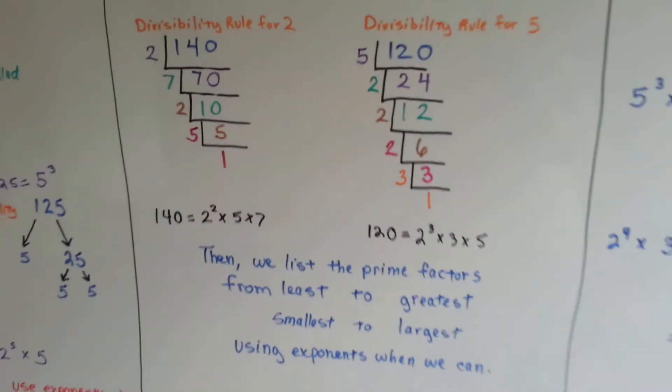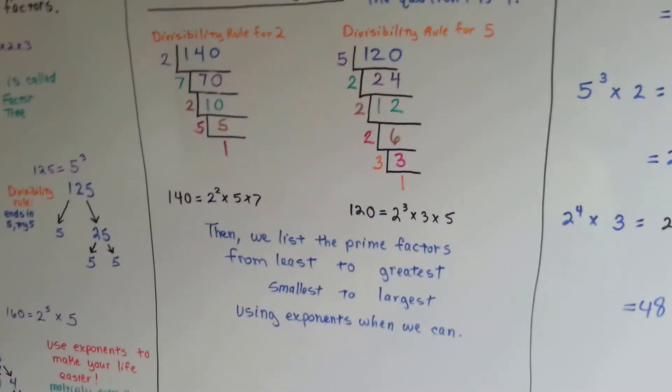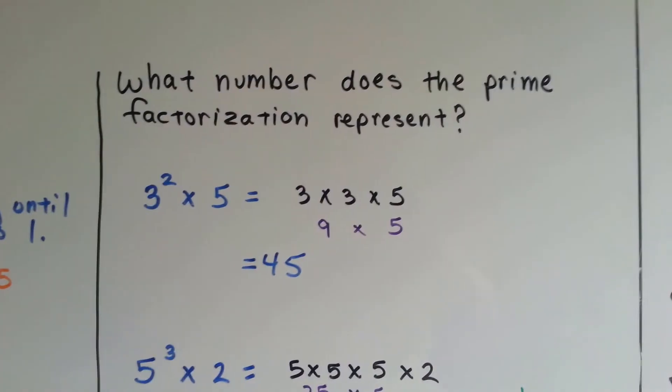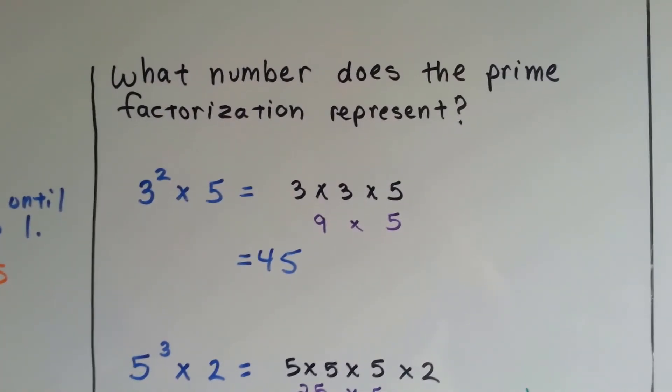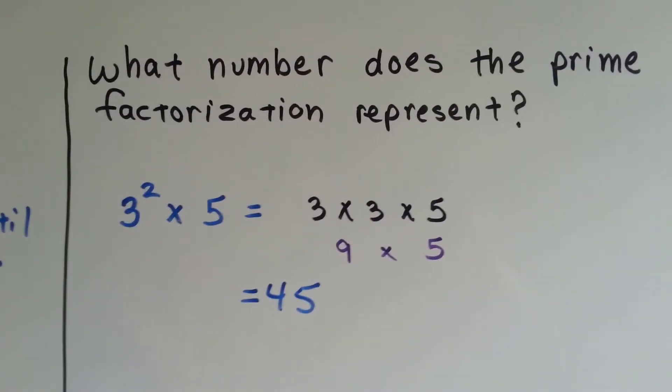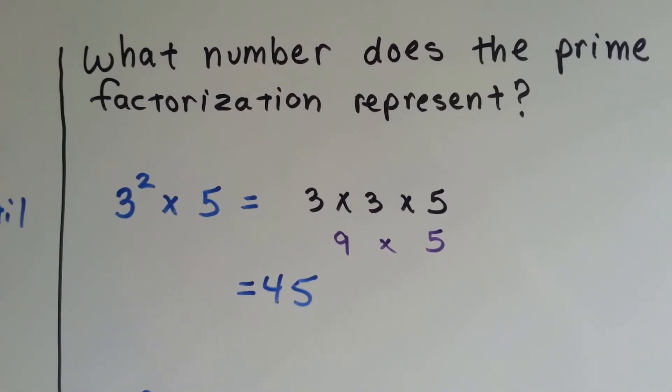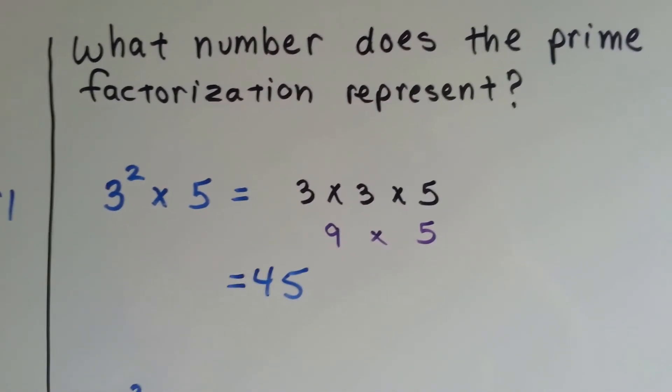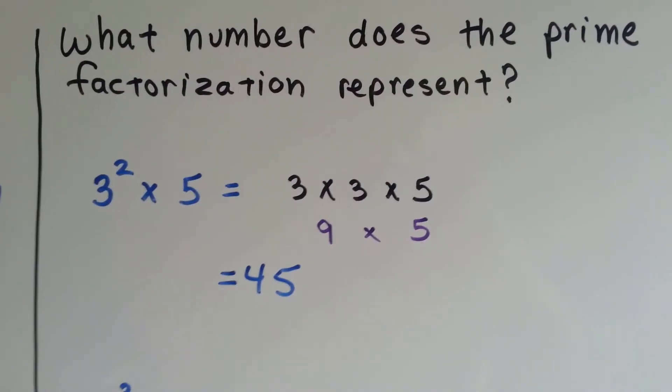You can do that. It's just an upside-down division. Now, what number does the prime factorization represent? All we have to do is open it up. The 3 to the second power means 3 times 3, right? So we have 3 times 3 times 5. Well, 3 times 3 is 9, and we multiply that by 5 and we get 45.